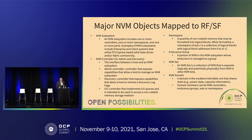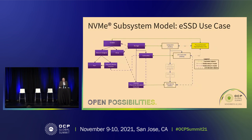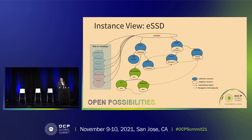Here are some of the major NVMe objects mapped into Redfish and Swordfish: NVMe subsystem, NVMe controller, IO, admin and discovery controllers, namespaces, endurance groups, NVM sets, and NVM domains. Refer to the NVMe specs and technical proposals for more information. This is what it looks like in Redfish and Swordfish — this is an ESSD use case where you have objects in the Redfish-Swordfish model mapped to objects in the NVMe model, including an instance view of an ESSD with fabric parts such as ports.